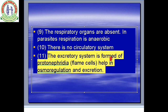The excretory system is formed of protonephridia, also called flame cells. Very important: protonephridia or flame cells function in both excretion and osmoregulation, similar to how kidneys function in our body. So in Platyhelminthes, the excretory system consists of protonephridia or flame cells, which help in osmoregulation and excretion.